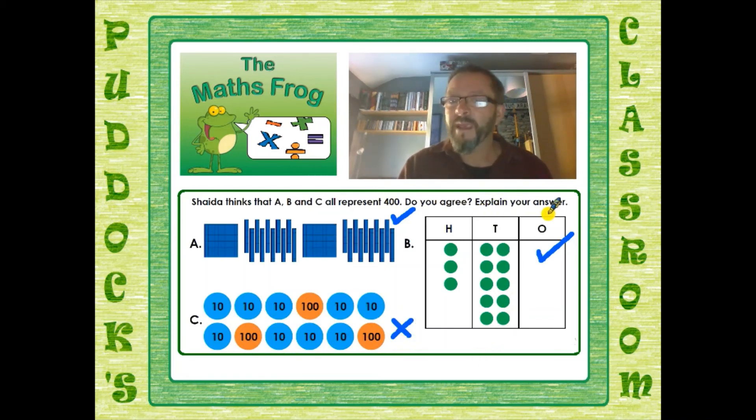It says here to explain your answer. If you have done all that with the person who is watching you do this, the adult who's watching you do this, you will have explained it. You've already done that by working out what all the numbers are. So I would say that Shida is not correct because this one C is only 390. Those are the type of questions that you have to do.